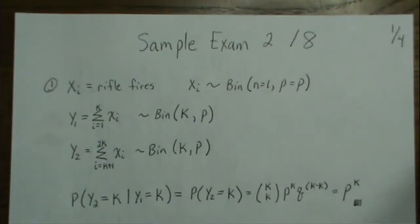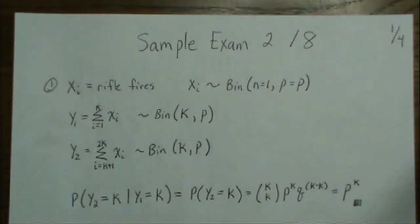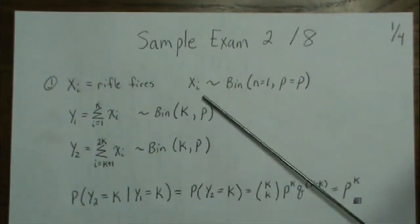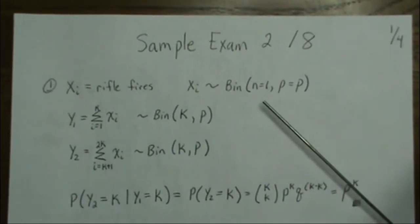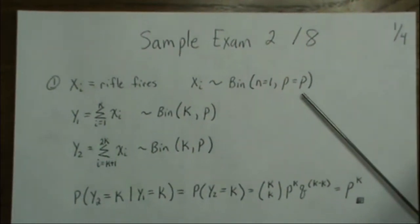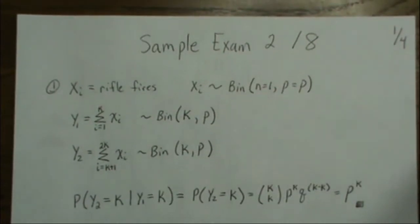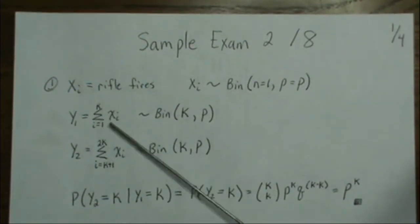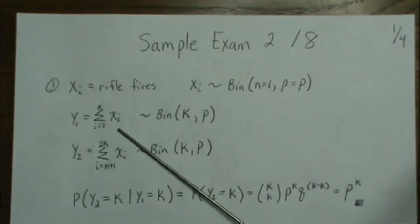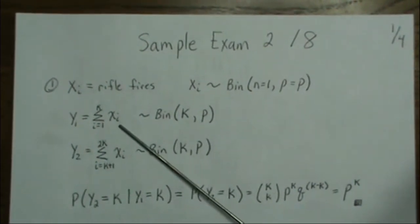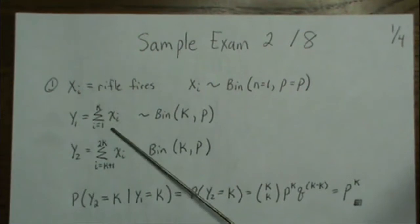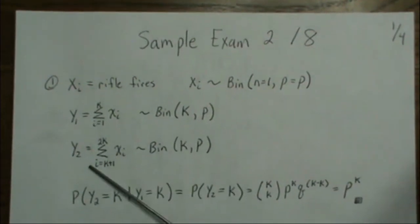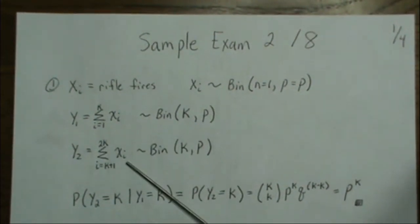Solutions to sample exam two, problem number one. We're going to let X equal that the rifle fires, where it could fire or not fire. X would have a binomial with n equal to one and probability of firing P. It tells us that the first K observations — the sum of each rifle fire — fired. And then it's asking about the next K times the rifle fires.